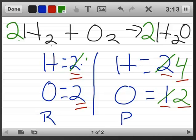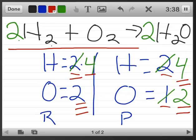I didn't affect my oxygens at all that time. So now, I have 4 hydrogens here and 4 hydrogens here. 2 oxygens on the reactant side and 2 oxygens on the product side. My equation is officially balanced. 2 molecules of hydrogen plus 1 molecule of oxygen yields 2 molecules of water or H2O.